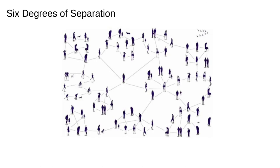232 out of 296 letters failed to reach the destination. Of the 64 letters that got there, some arrived in only one or two steps, while some required as many as nine or ten forwards. The average was around six. Though Milgram didn't use the phrase 'six degrees of separation,' the fact that his average came out as six is likely the origin of the popular catchphrase.